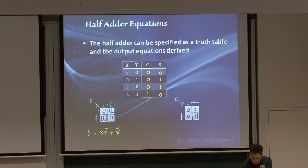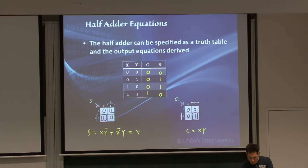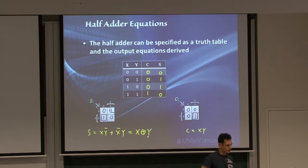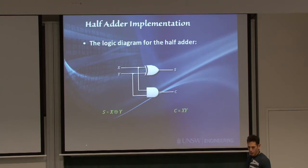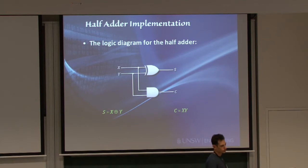The sum S equals: x NOT-y, OR NOT-x y. That's an XOR gate — so S = x XOR y. And for C, it's just x AND y. Clearly when you see this structure you immediately think that's an XOR gate, so S becomes x XOR y. From these equations we can come up with the half-adder circuit. The half-adder takes two bits x and y, adds them together to produce the sum and a possible carry from the addition.